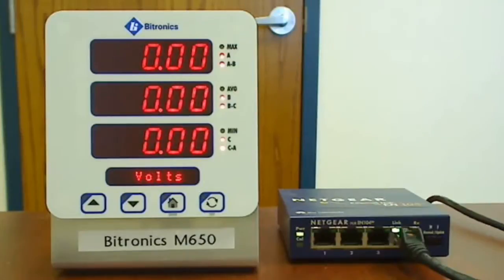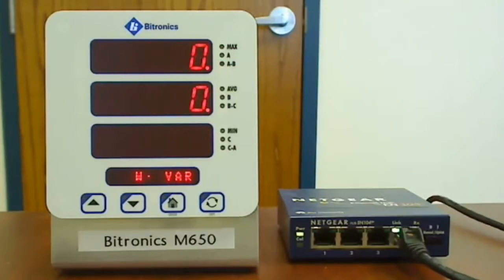After saving the changes, the meter automatically initiates a reboot to make the new settings active. Then it returns to the normal operating mode. At this point, the network address settings have been configured so you can now connect the M650 to your local area network.